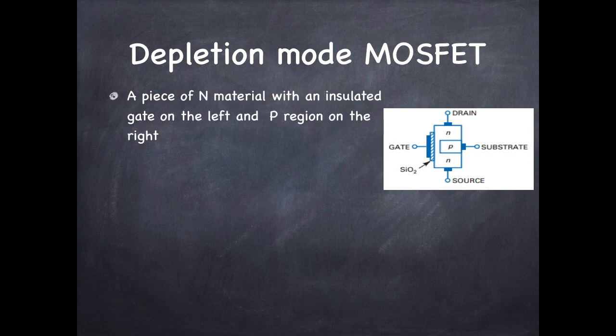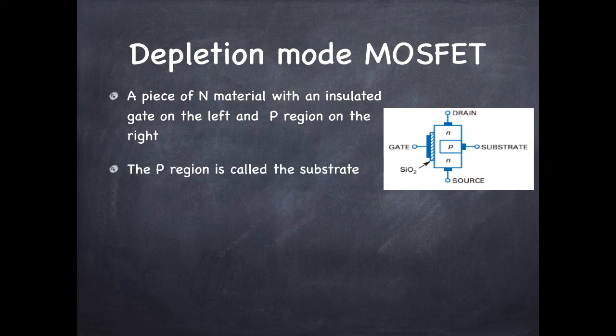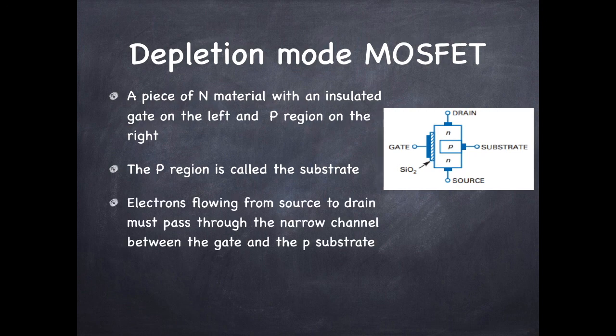The P region is called the substrate. It is actually the body on which source and drain terminals are diffused. The electrons flow from source to drain and they pass through the narrow channel between the gate and the P substrate. So we do have a channel between source and drain in case of depletion MOSFET.